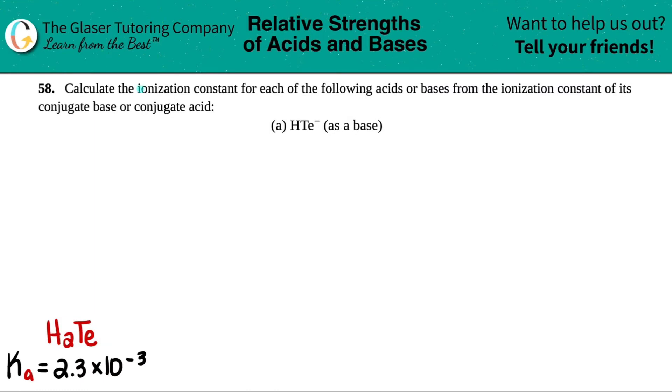Number 58. Calculate the ionization constant for each of the following acids or bases from the ionization constant of its conjugate base or conjugate acid.